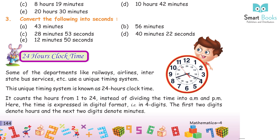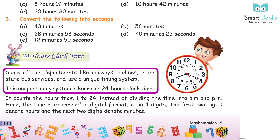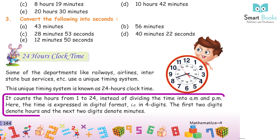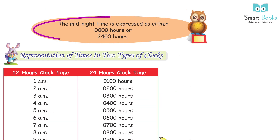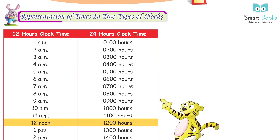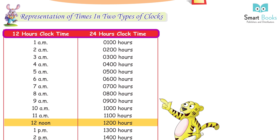Clock Time: Some departments like railways, airlines, and interstate bus services use a unique timing system known as 24-hour clock time. It counts the hours from 1 to 24 instead of dividing time into AM and PM. The time is expressed in digital format in four digits — the first two digits denote hours and the next two denote minutes. Midnight is expressed as either 0000 hours or 2400 hours. There are two types: 12-hour clock time and 24-hour clock time.